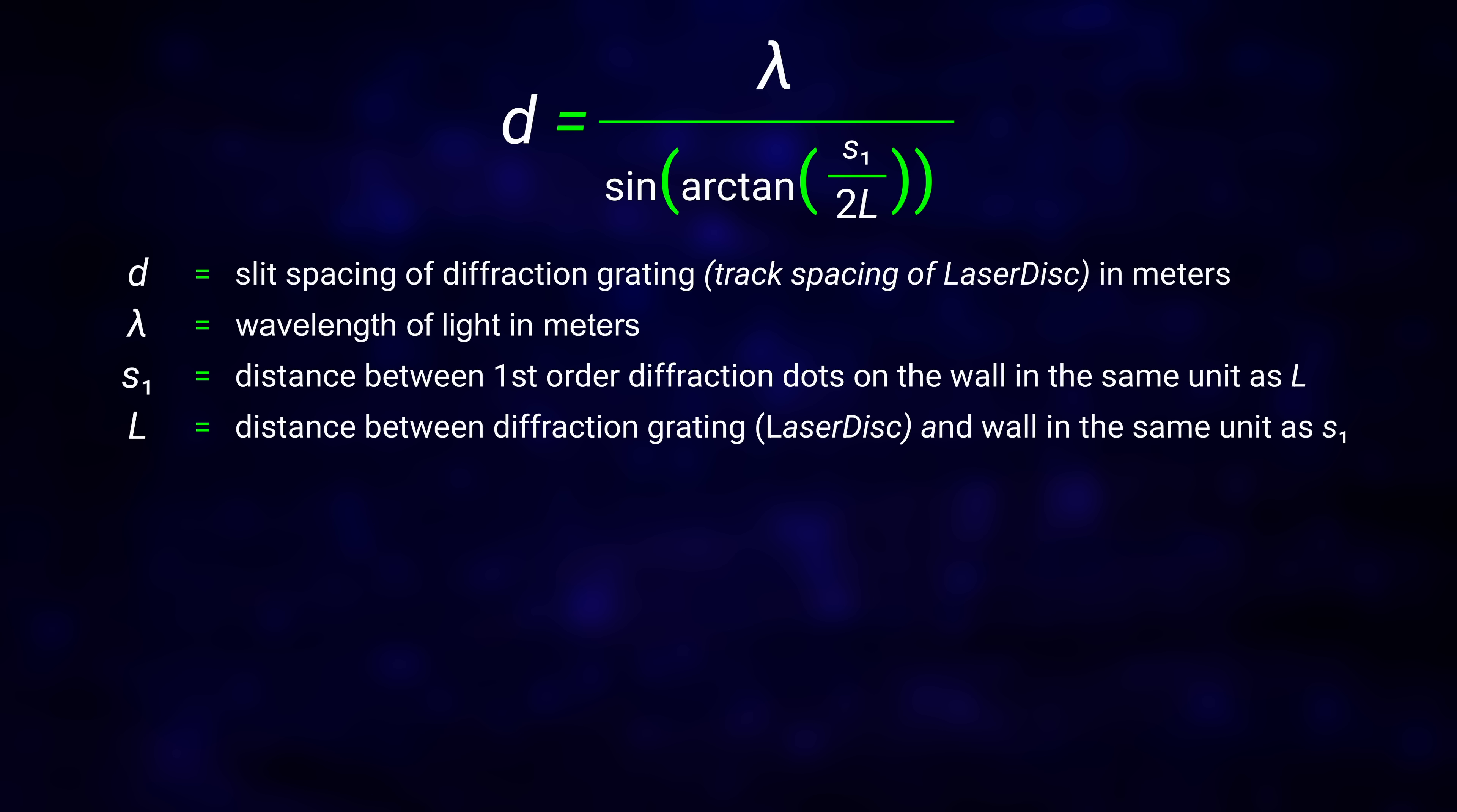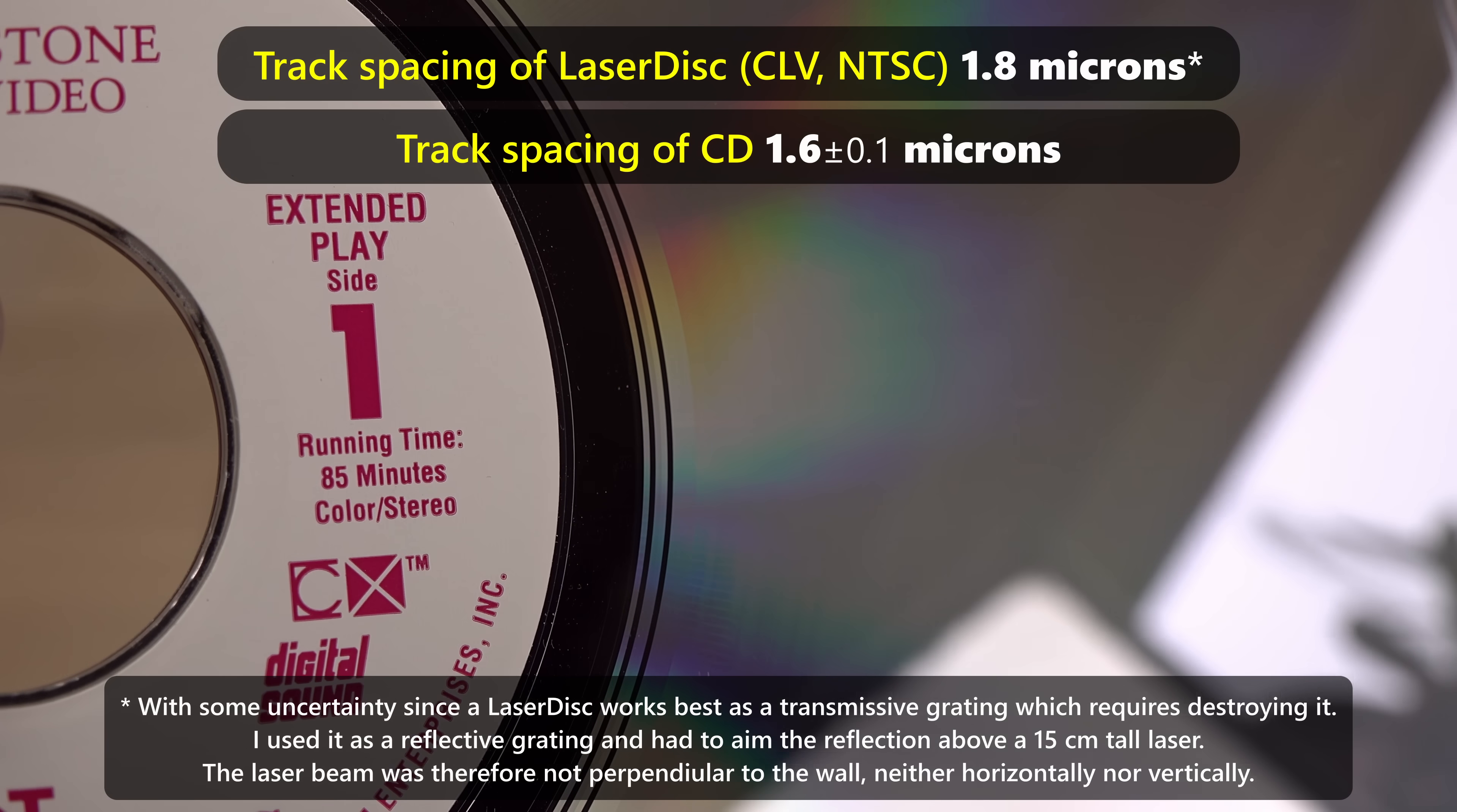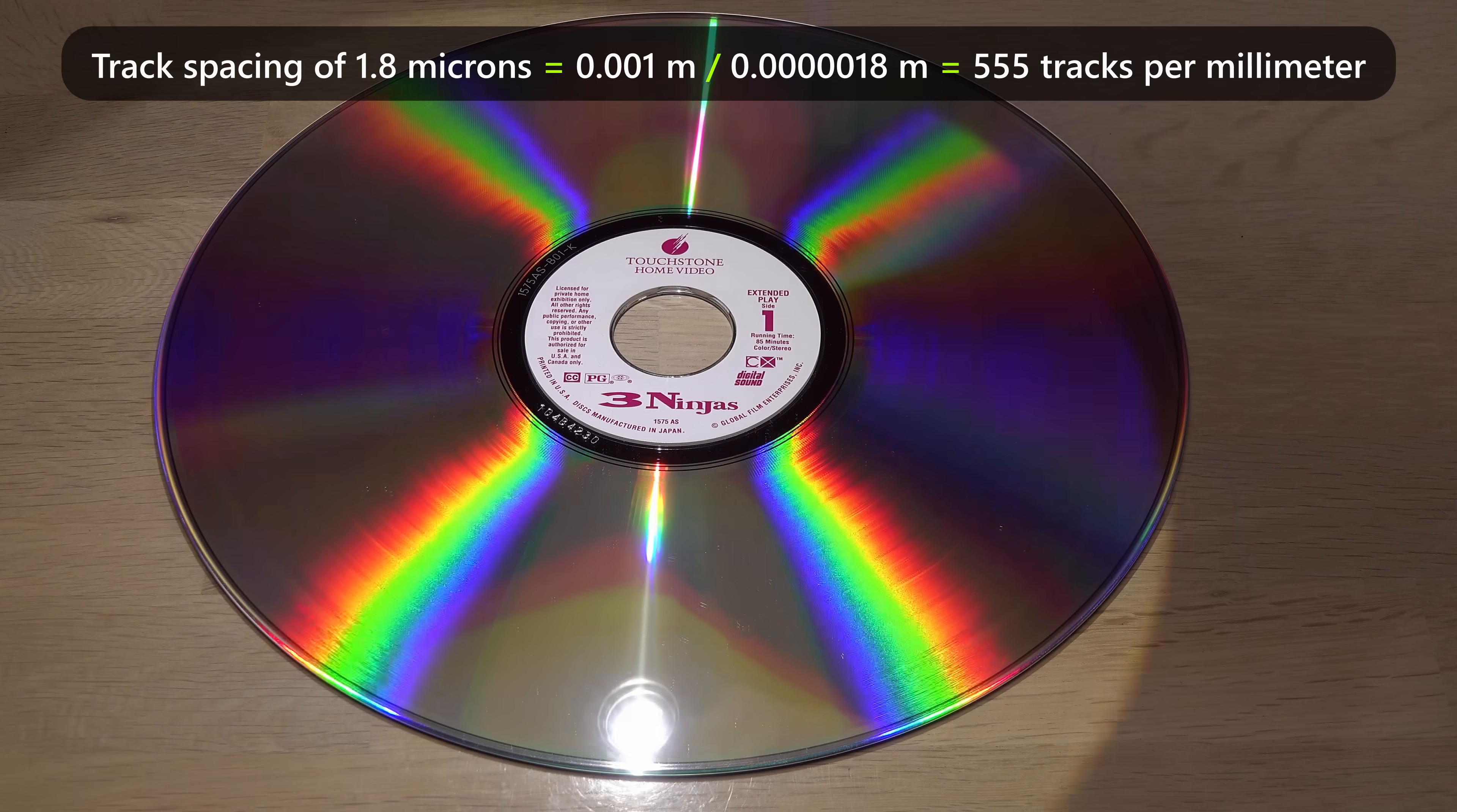The measurements fit with a track spacing of 1.786 micrometers for this CLV NTSC laser disc. 1.8 microns. Seems reasonable considering the later invented CD format used a tighter, harder to read track spacing around 1.6 microns. 1.8 microns still equals an impressive 555 lines per millimeter.